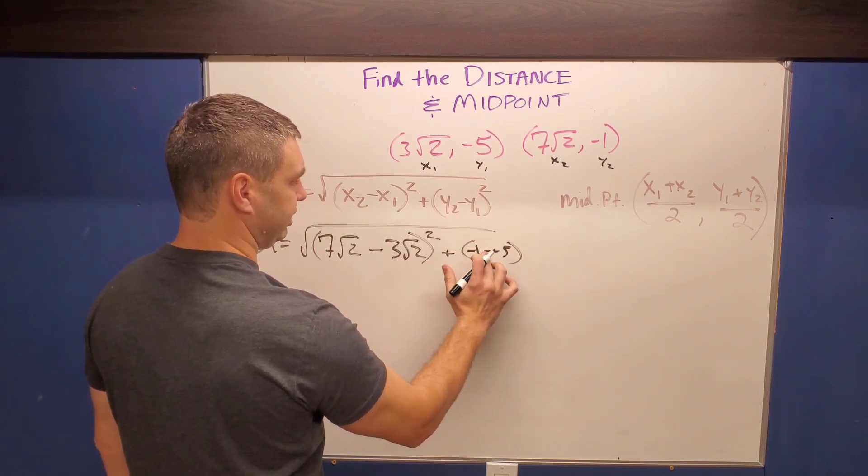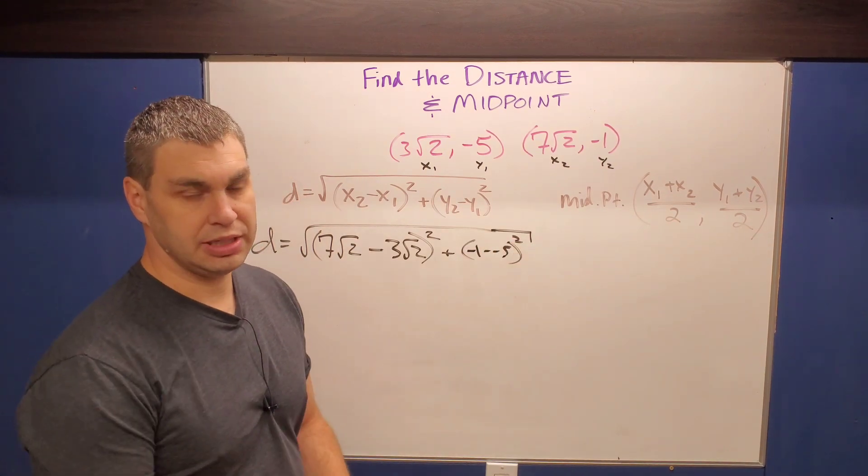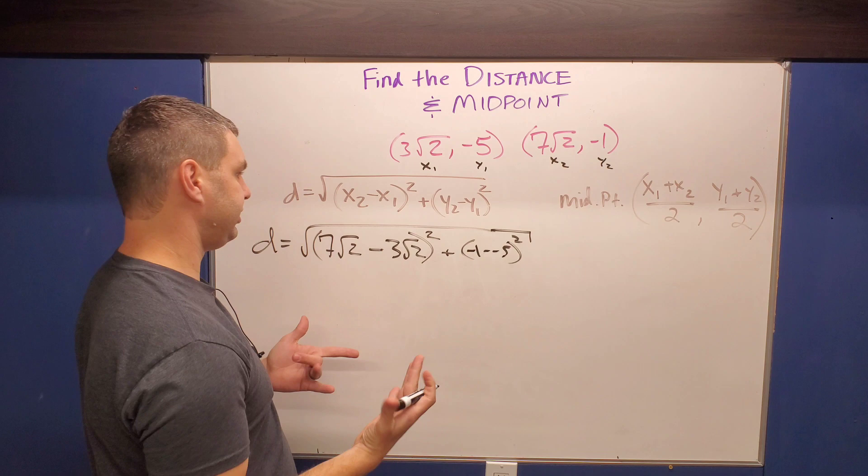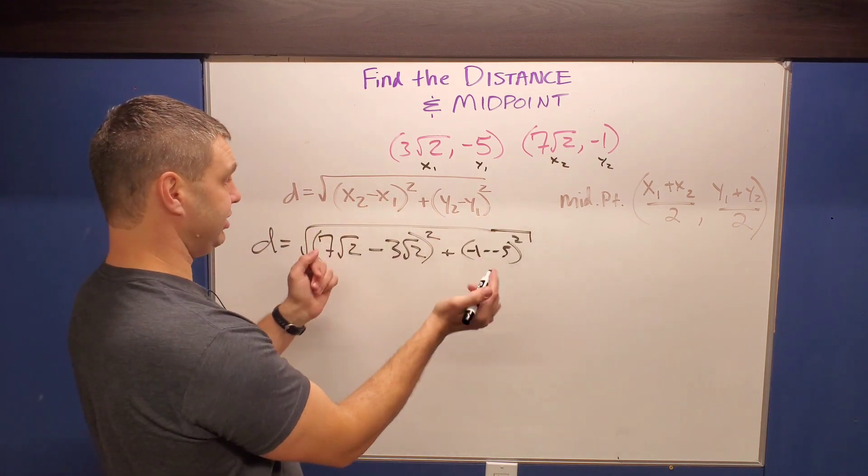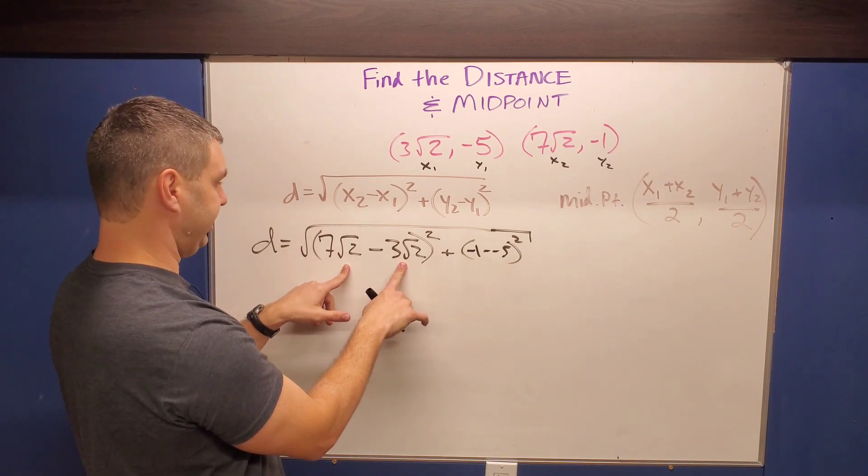That's gonna turn positive eventually. Anyway, that's also squared, and then still underneath the square root. So let's go ahead and simplify this a little bit, and you'll see that those points are kind of matched up a certain way with the x's both being square roots of two, because that's gonna cancel kind of nicely.